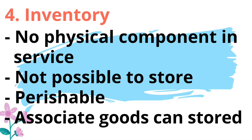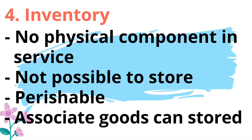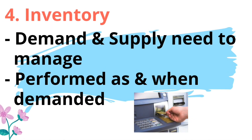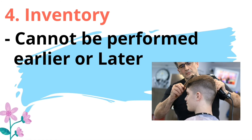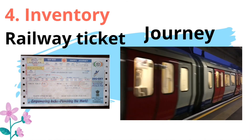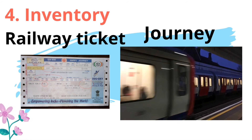Next is Inventory. There is no physical component in services, so it is not possible to store them for future use. Services are perishable in nature — the service provider can store some associated goods but cannot store the service itself. Demand and supply need to be managed because a service has to be performed as and when the customer demands it. They cannot be performed earlier or at a later date. For example, a railway ticket can be stored, but the railway journey will be experienced only when the railway provides it.